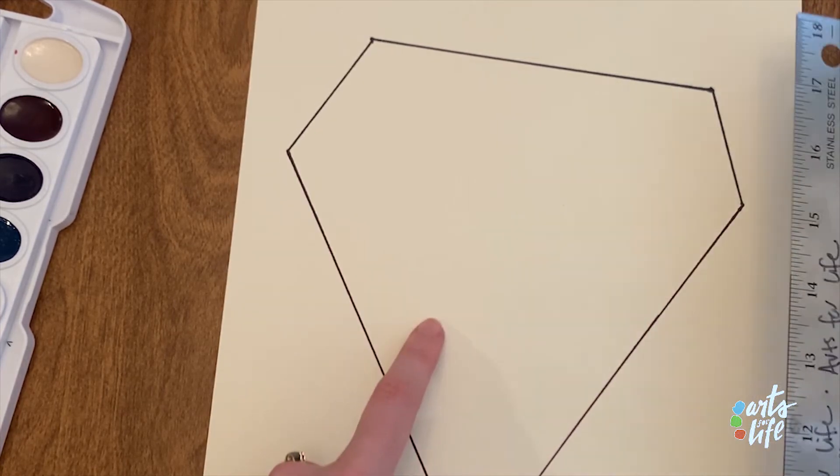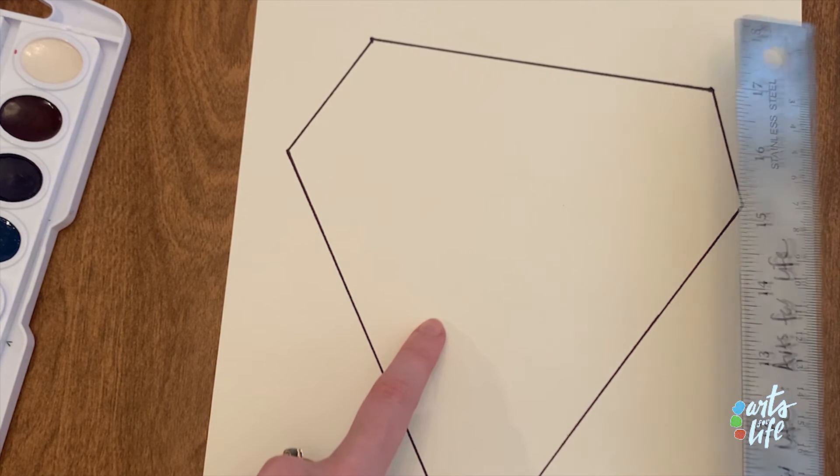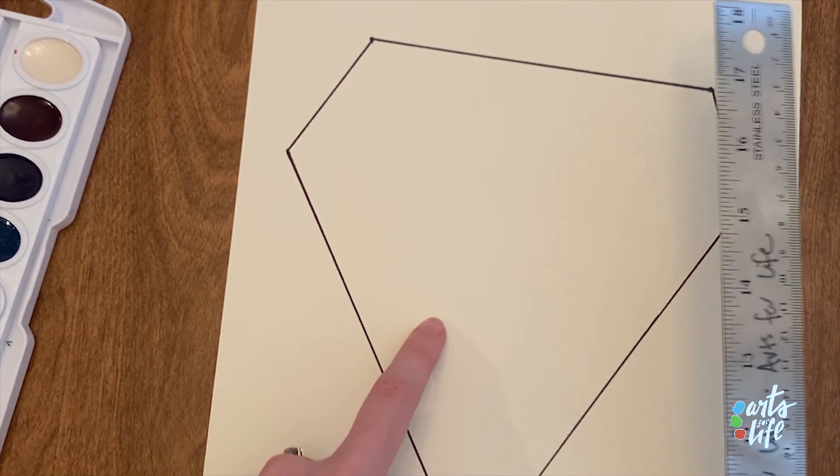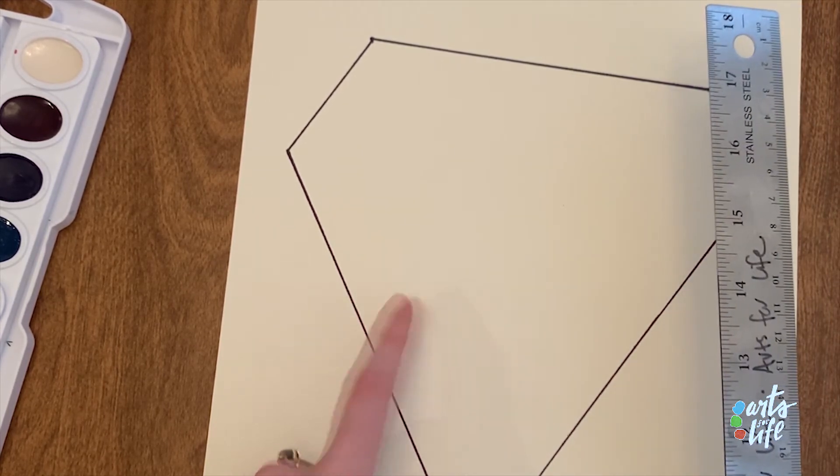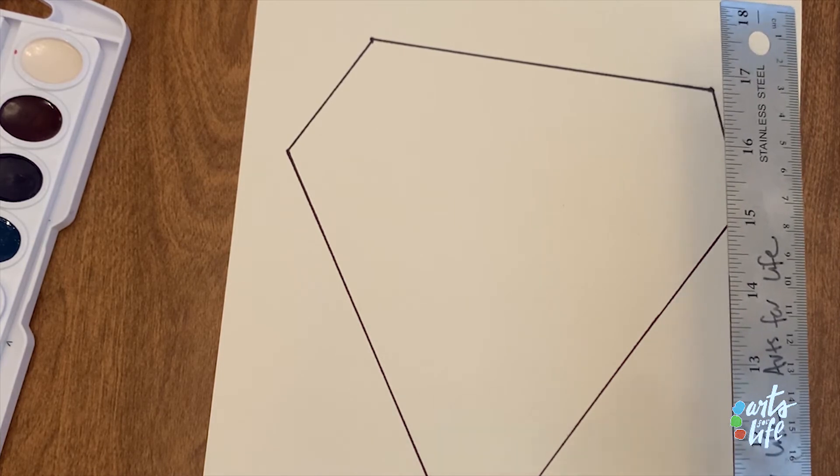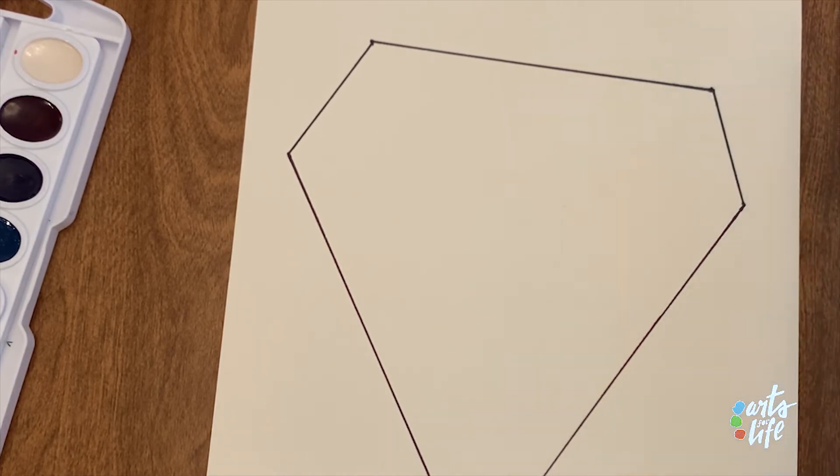And then we're going to make different geometric shapes. So they can be triangles, trapezoids, lines, anything that are several lines connected to make a shape, a geometric shape.